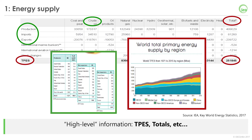By aggregating these rows, we can calculate the total primary energy supply of the country, which is probably the single most important row in the energy balance. We can also compute the total of all energy products by summing all the columns, giving us high-level information like total primary energy supply.